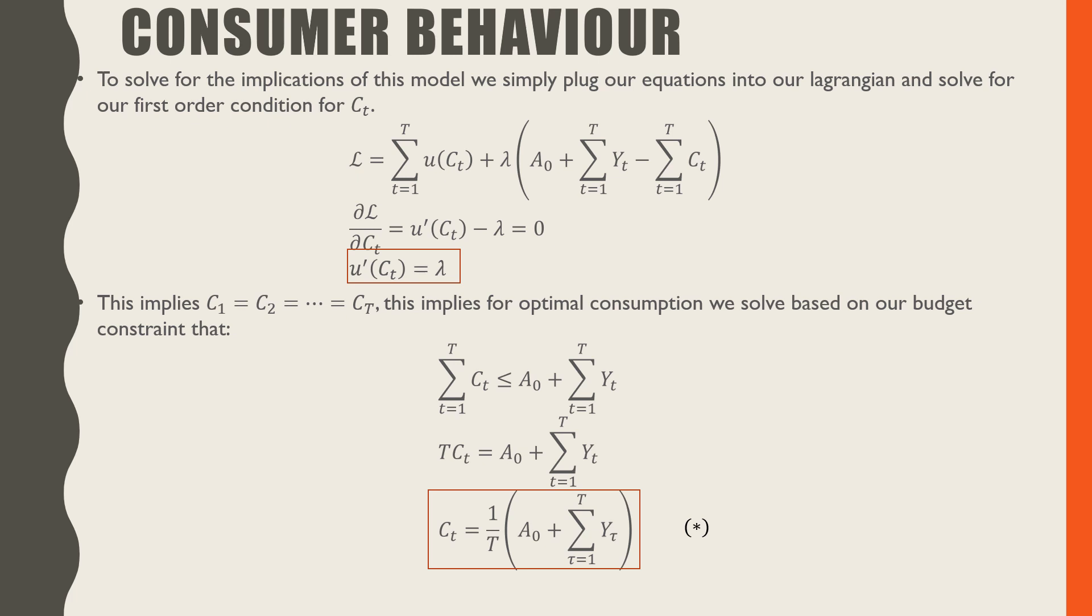Practically speaking, if we want to find those values, we simply recall a property of sums, where we know that if we have the same value over and over again, it's the same as multiplying. So going to our budget constraint, we simply change our sum for C_t to just T times C_t. Rearranging this, we get this sort of average where our optimal consumption over time equals 1 over T times this endowment plus the lifetime labor flows.